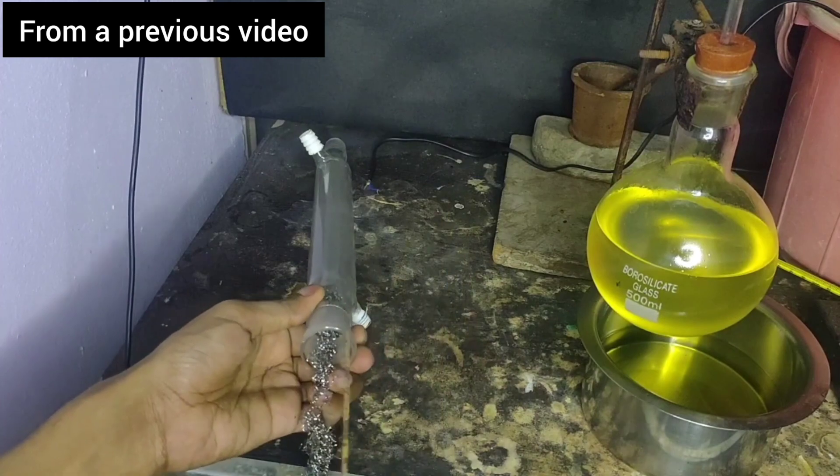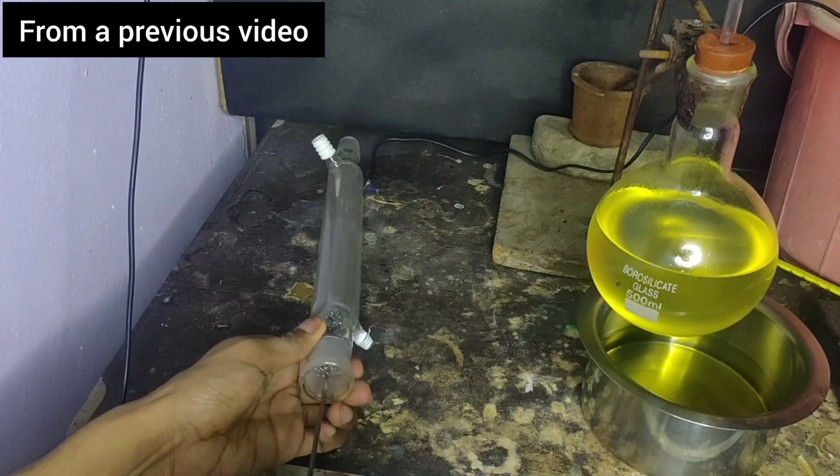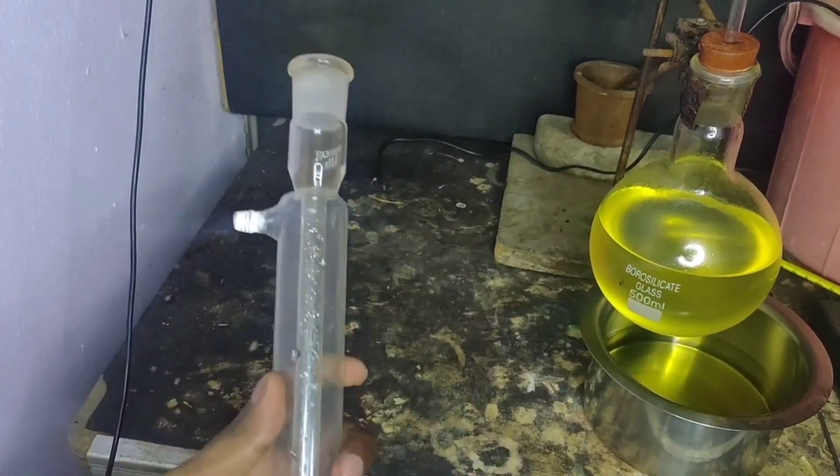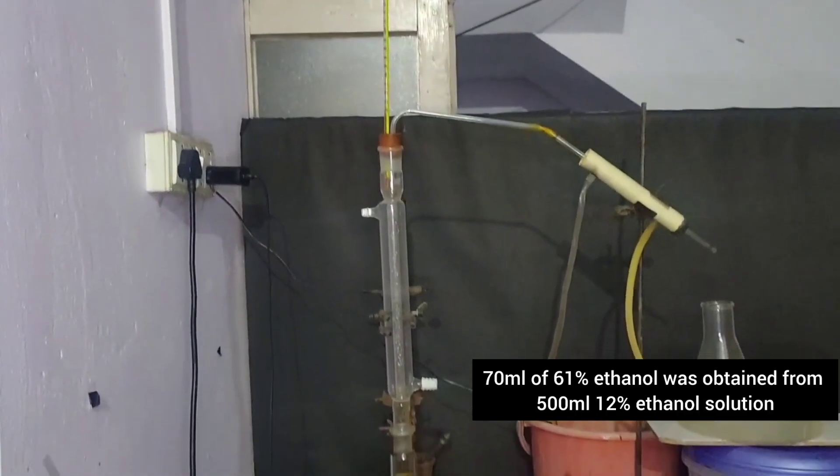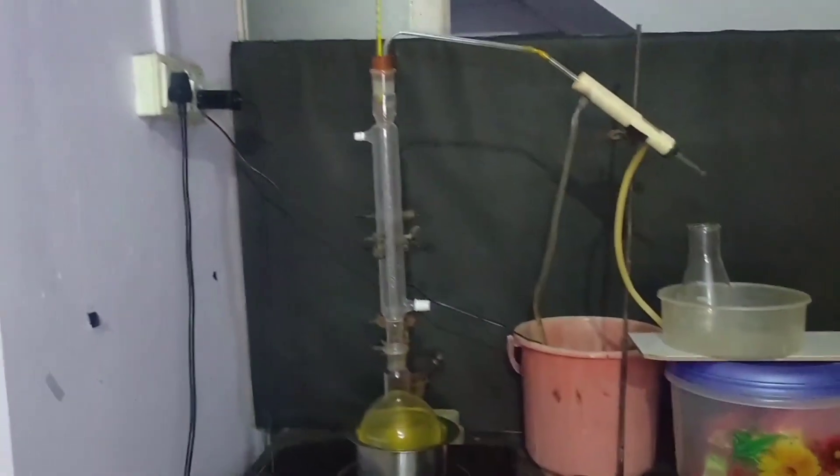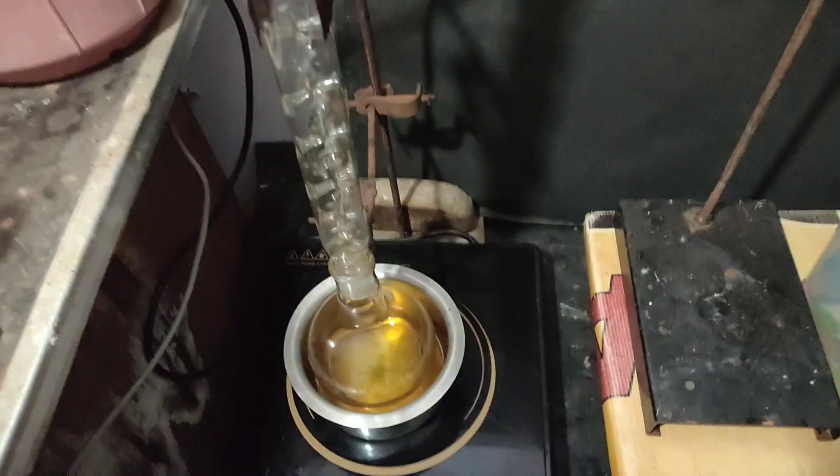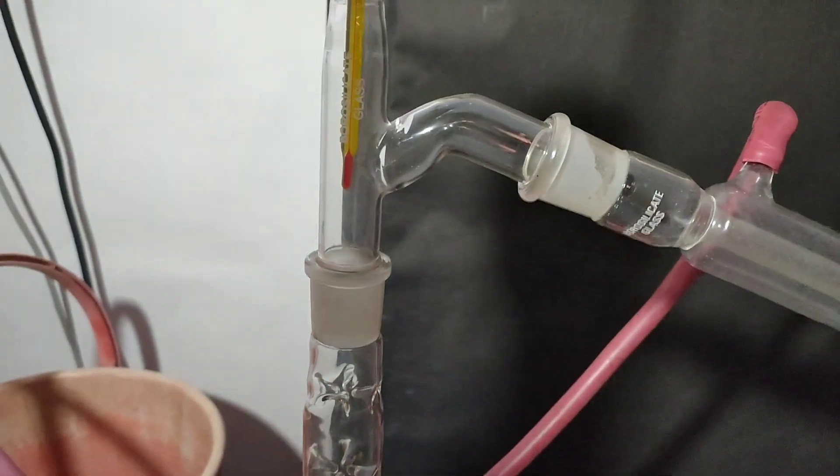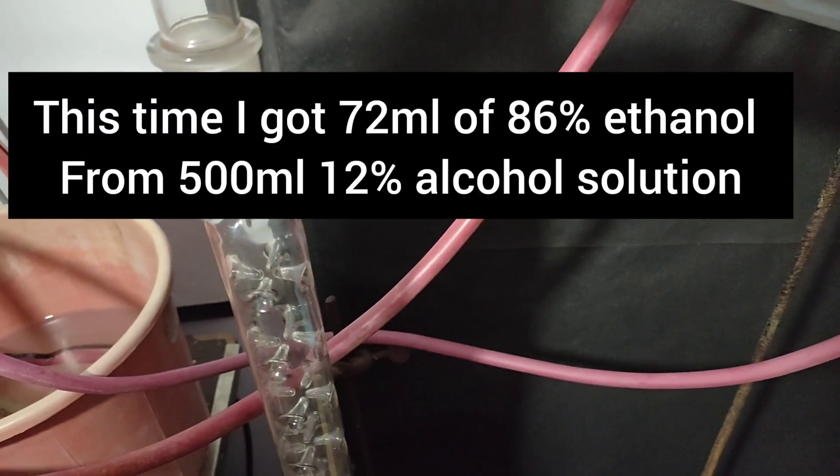If one doesn't have a fractionating column, one can pack a Liebig condenser with steel wool like I did in my alcohol making video. From 500ml of 12% alcohol solution we got only 70ml of 61% ethanol. Then I purchased a Vigreux column and again made ethanol the same way but without yeast. This time on distilling I got 72ml of 86% ethanol solution.